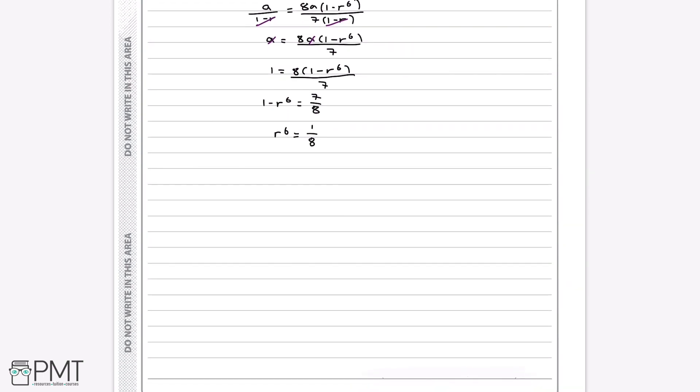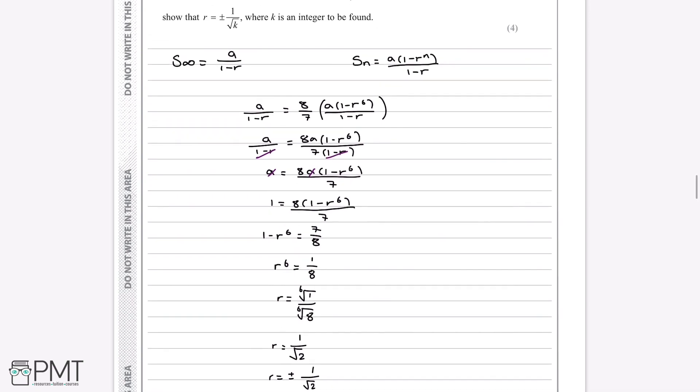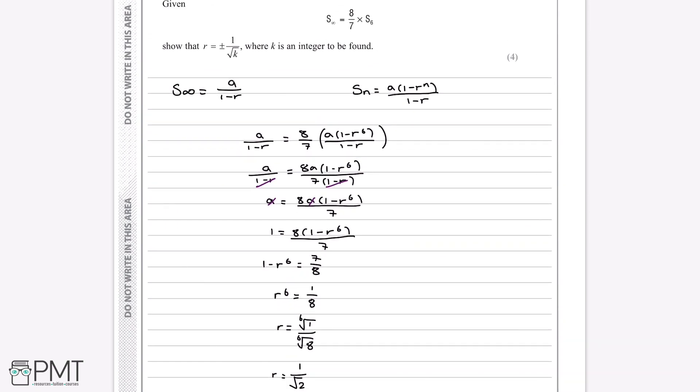And then we can solve this further by taking the sixth root of everything. And obviously the sixth root of 1 is just 1, but the sixth root of 8 can also be written as root 2. And therefore we can write, I should add a plus or minus in front of that, we can write that r is equal to plus or minus 1 over root 2, which is just the form that they've given in the question here.